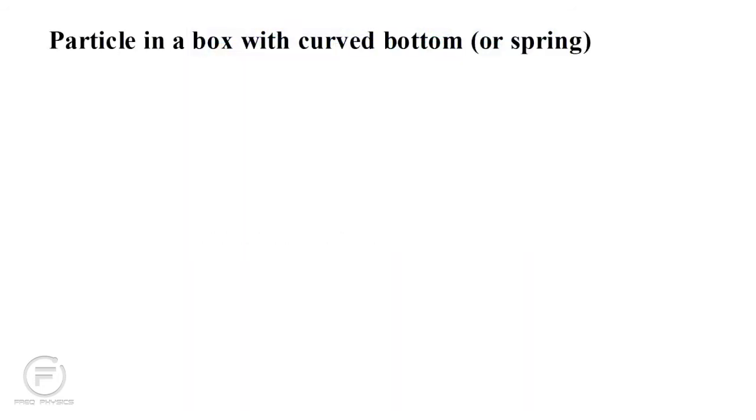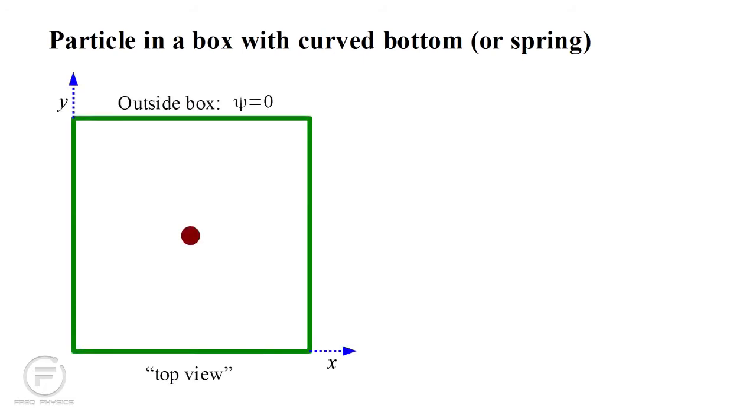Let's mix things up by curving the bottom of our box, or equivalently using a spring to attach the electron to the middle of the box. Everything is as before, except that the potential is now proportional to the square of the electron's distance from the center of the box. If it moves a small distance, it feels a small force pulling it back towards the center. If it's a large distance, the force is large.